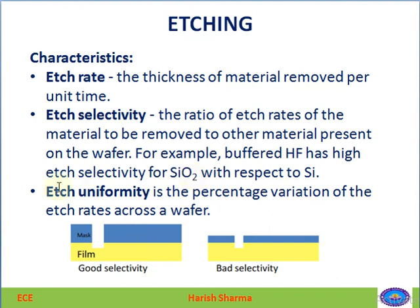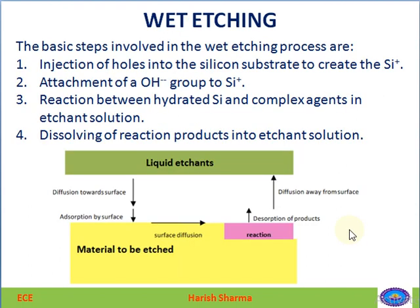Etch uniformity is the percentage variation of the etch rate across the wafer — meaning how uniform the etching is over the entire wafer surface. There may be areas etching more or at different rates, so ideally there should be completely uniform etching. The basic steps involved in the wet etching process begin with injection of holes into the silicon substrate.